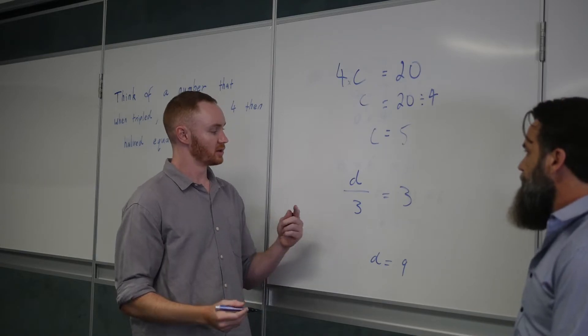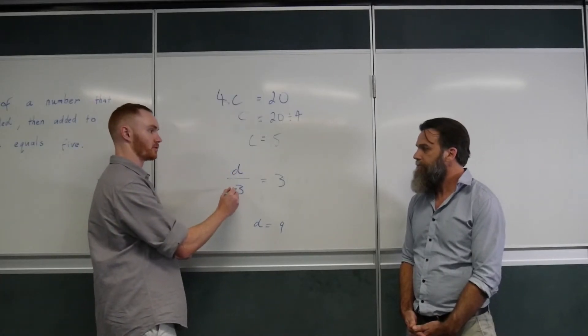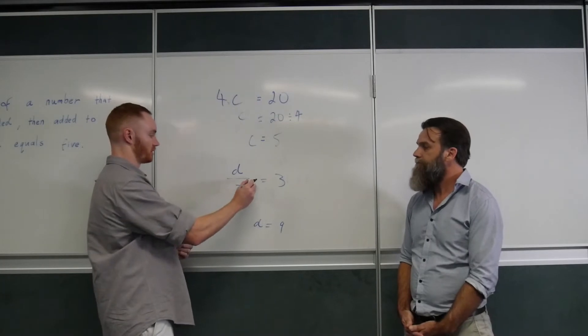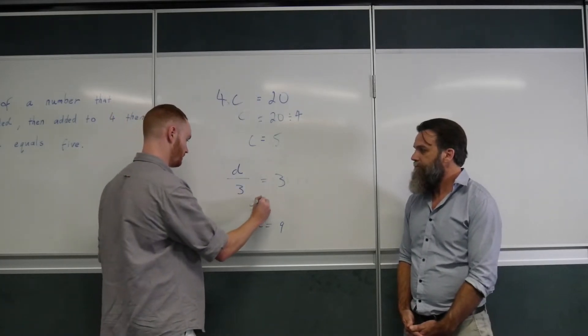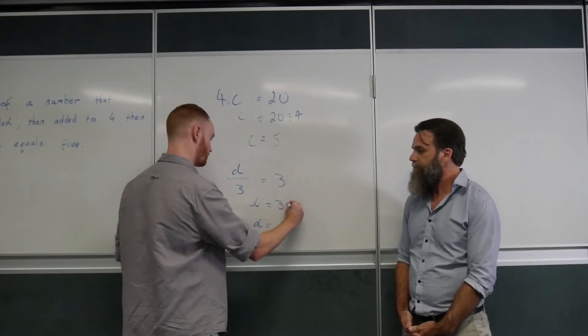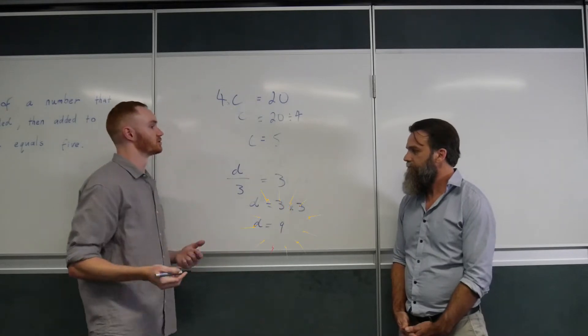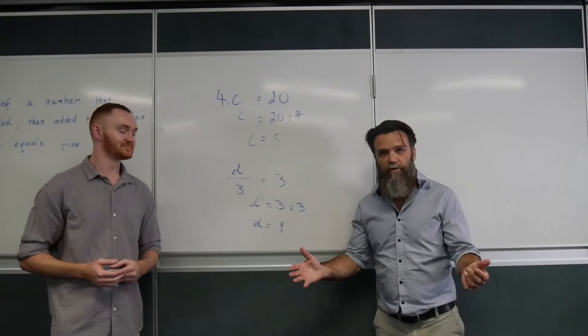So, in the last one, you did the opposite operation. So, if this is D divided by 3, I would have to multiply both sides by 3. That would cancel out the divide by 3 there, leaving just the letter. And on this side, I would show my working 3 multiplied by 3, which solves my solution of 9. Outstanding. Outstanding. And that is one-step algebra.